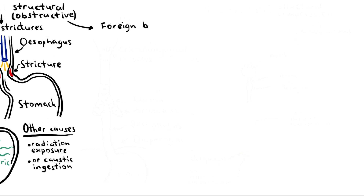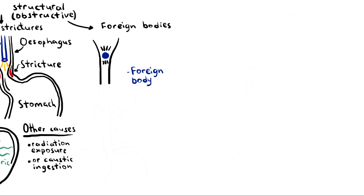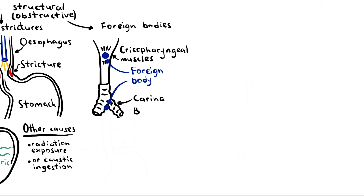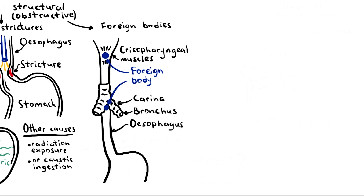Foreign bodies can also cause esophageal dysphagia if they become lodged in the esophagus. There are three main locations where obstruction can occur due to normal anatomical narrowing: at the level of the cricopharyngeal muscles, at the carina as the left bronchus crosses the esophagus, and where the esophagus passes through the diaphragm.